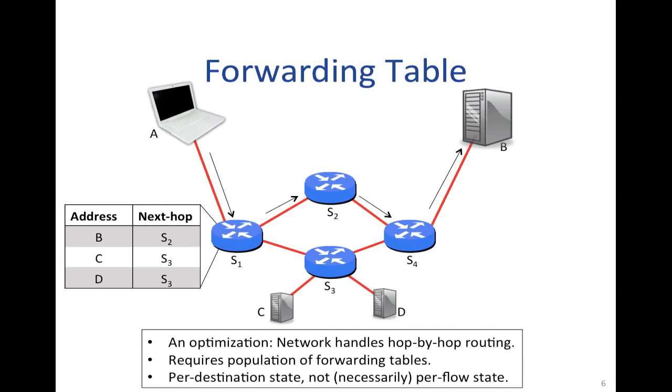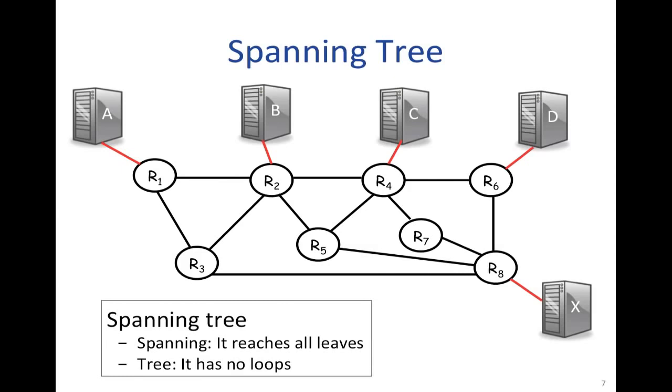It does require a population of the forwarding tables, so we need a way to populate these forwarding tables. And we're going to see in the next few videos various ways in which we can populate this table. So from here on, we're going to be making the assumption that we're using forwarding tables and that we need some method in order to populate this table in order to decide how the routing will take place. We have a predestination state in the network because for each of the destinations, we're going to have to have a next hop address populated in the table, although we don't necessarily have to have per flow state. Any flows in the network that are heading towards the same destination can all use the same entries.